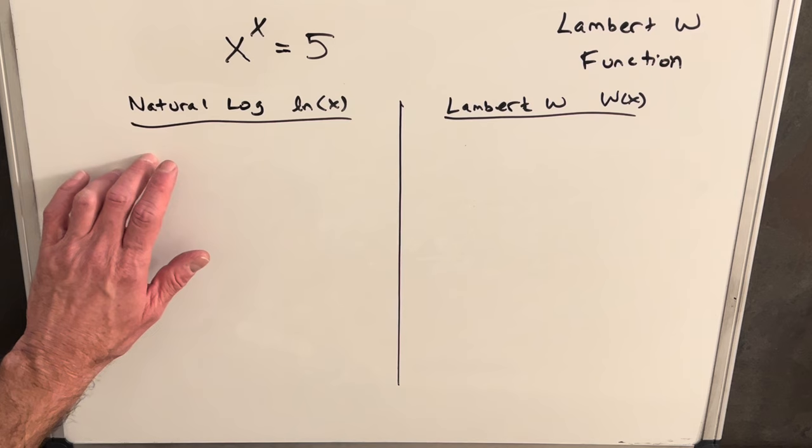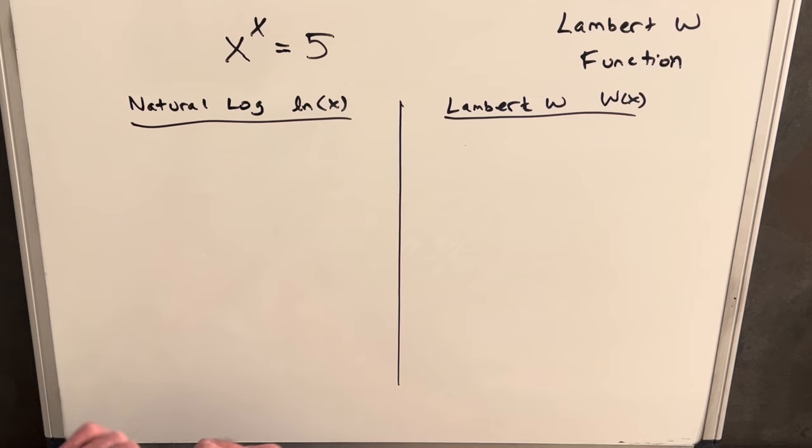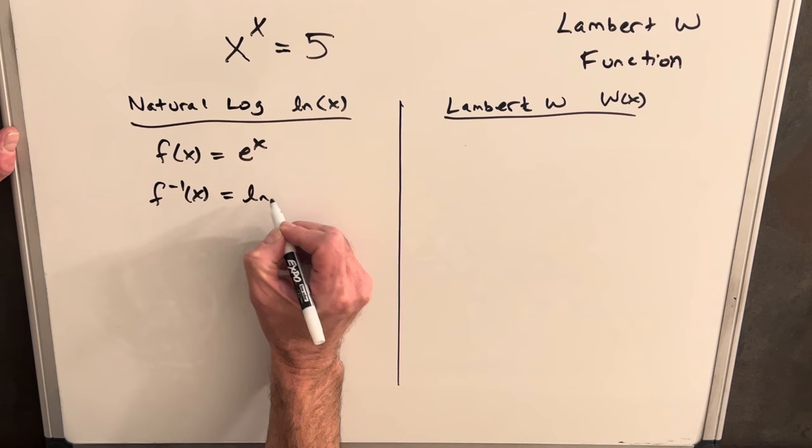So for the natural log we have a function e to the x and then in order to have our inverse of that function we just use the natural log.